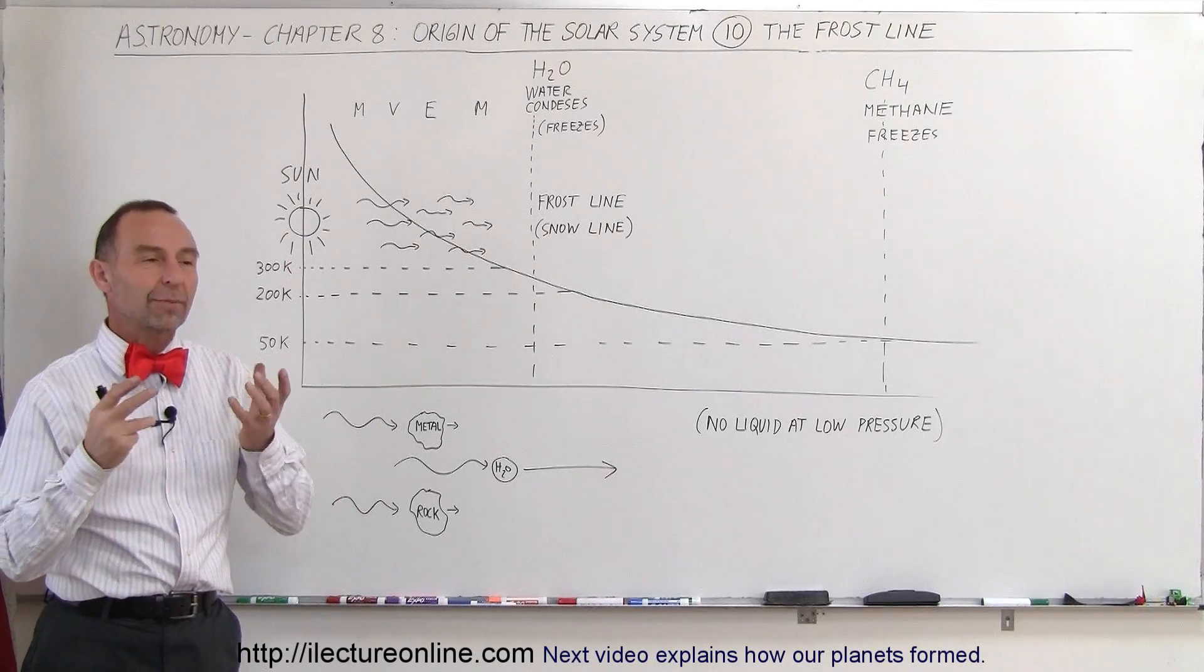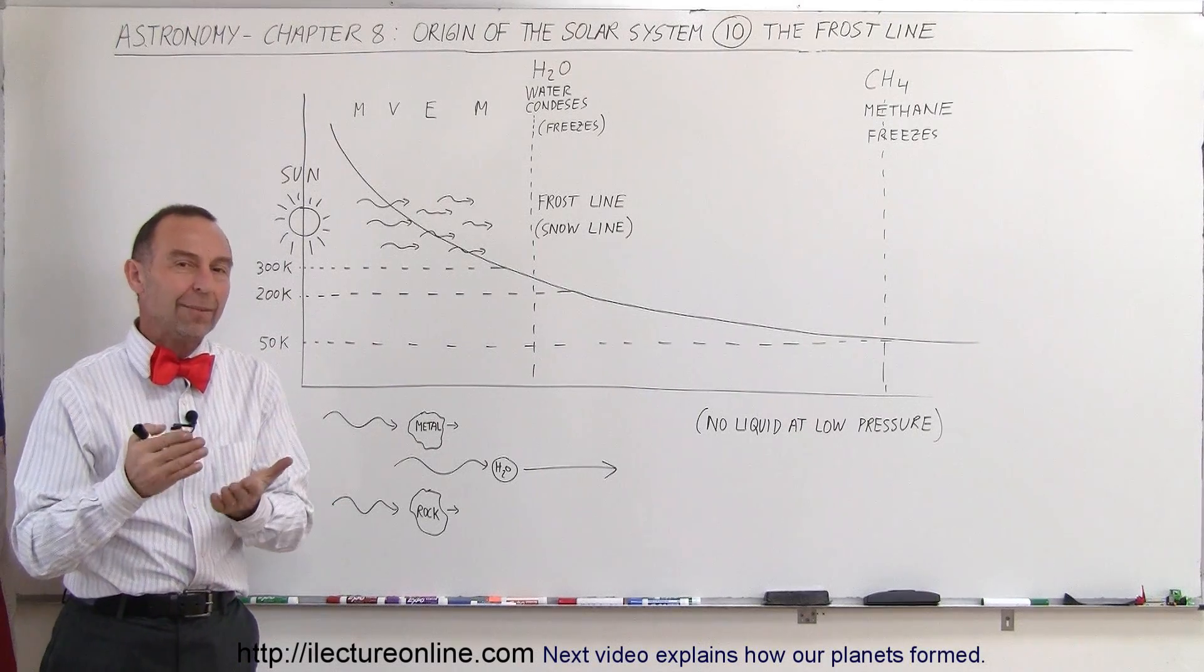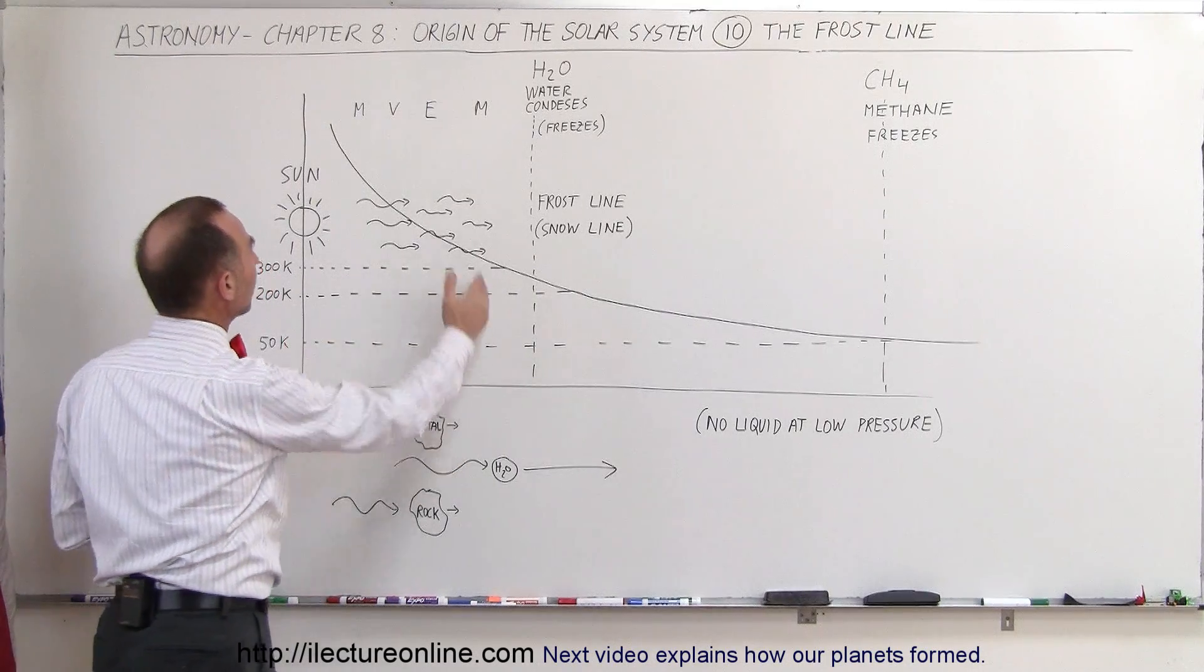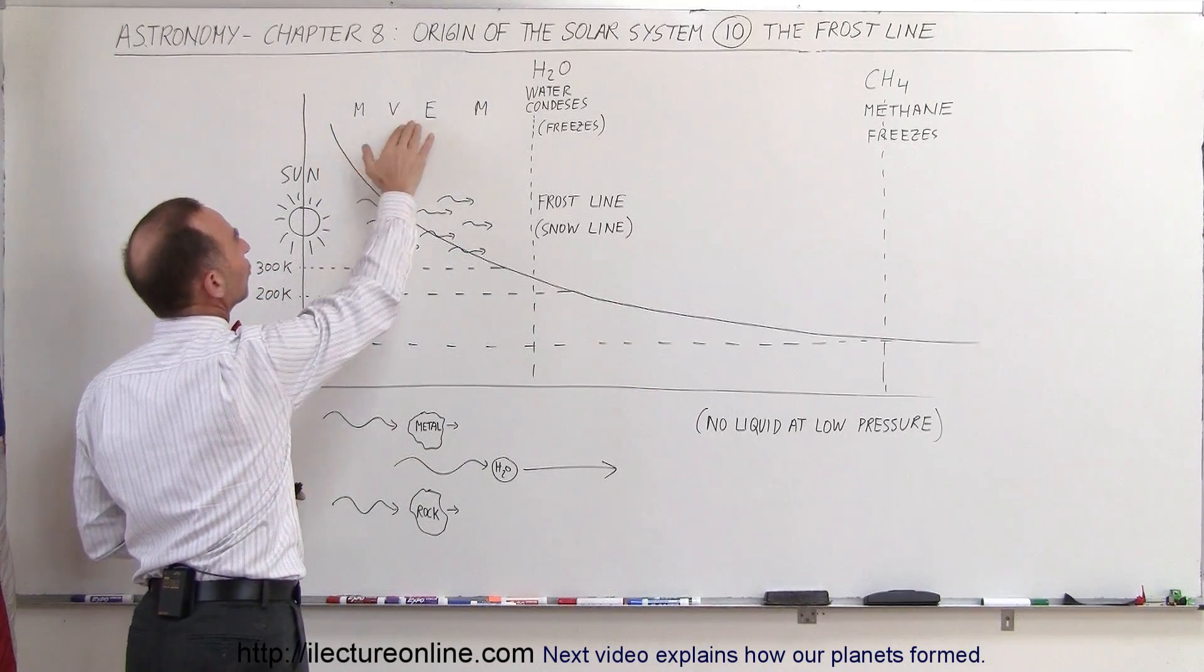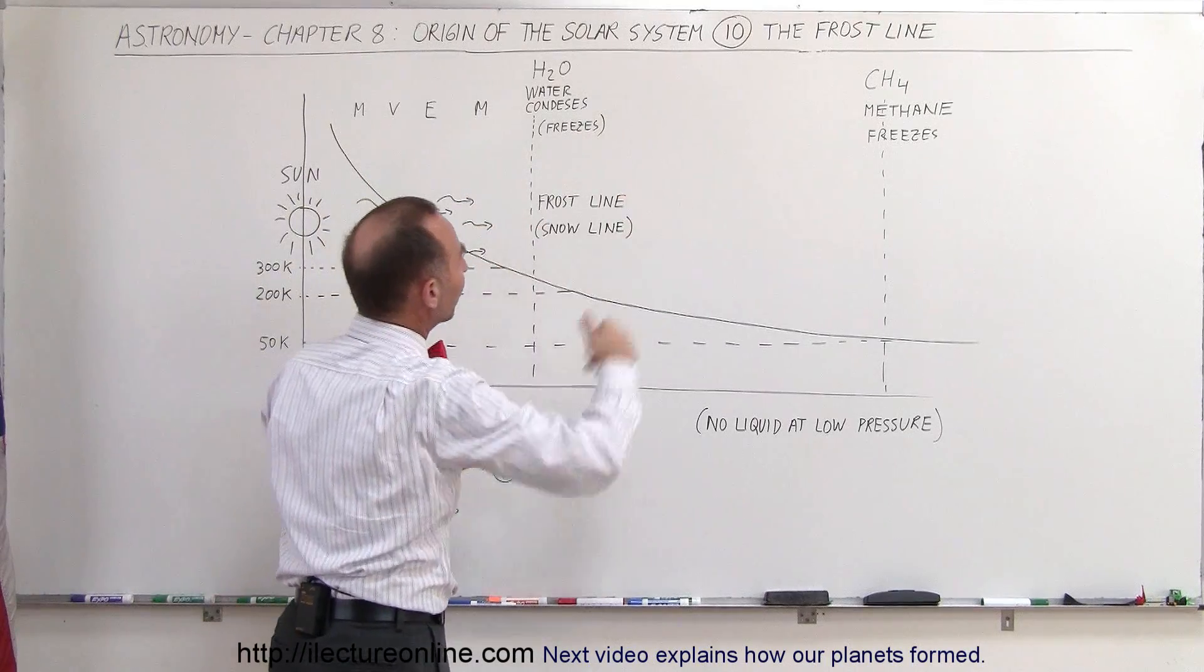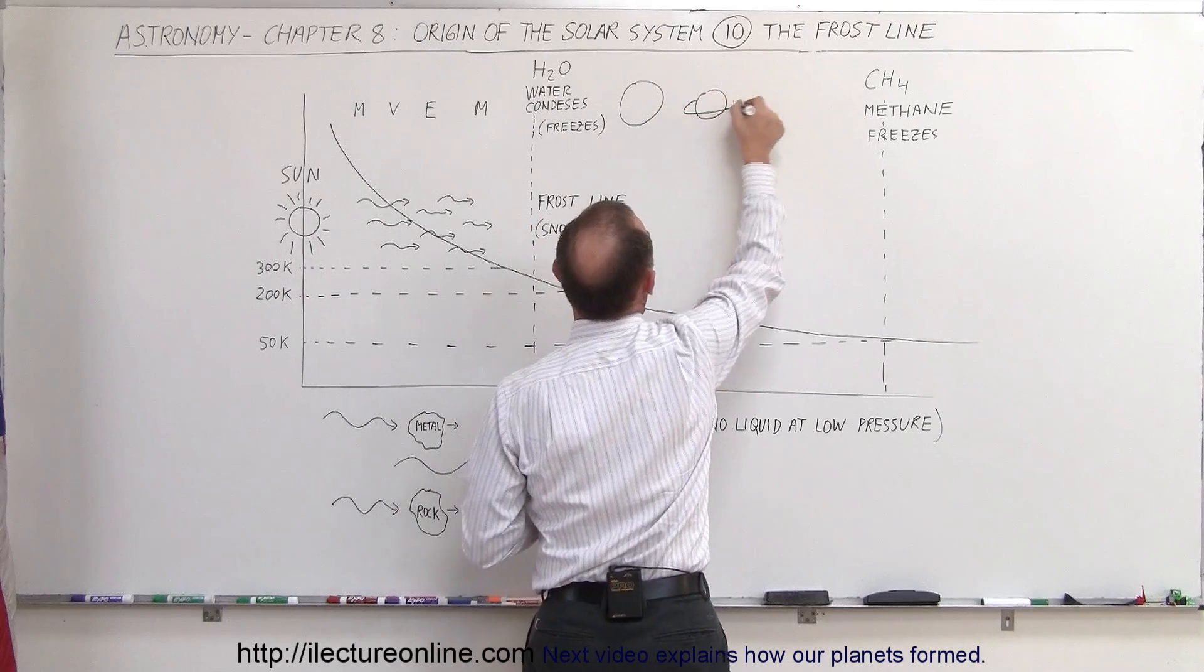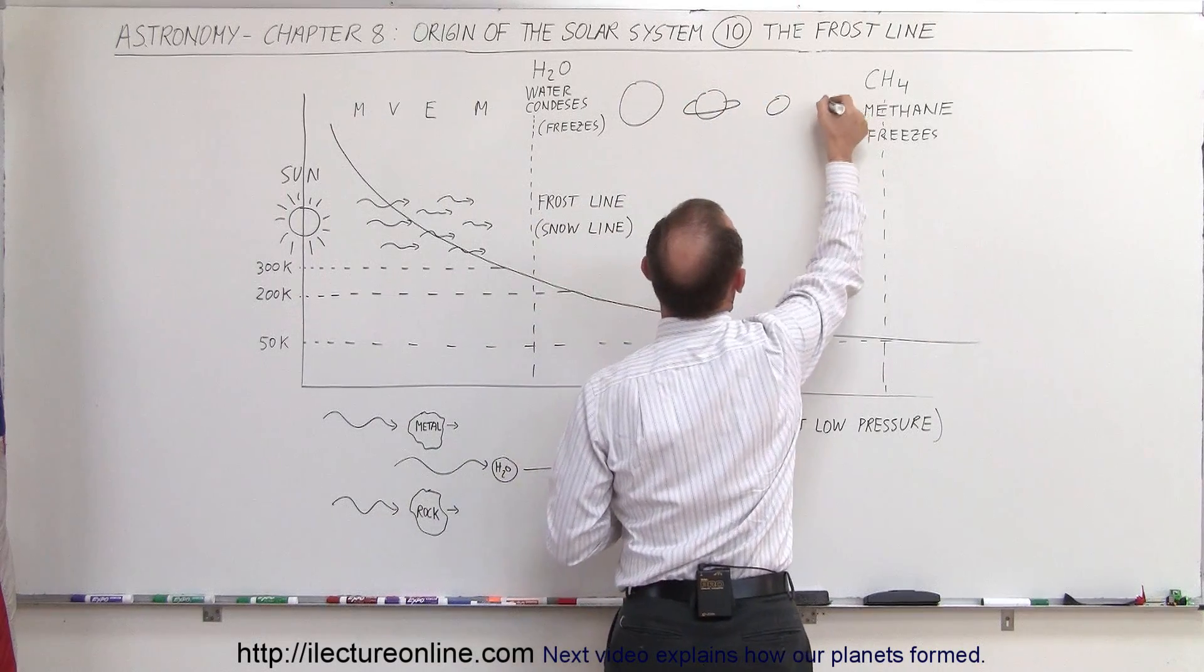Welcome to iLecture Online, and now let's talk about how the solar system became as differentiated as it is. In the inner solar system we have Mercury, Venus, Earth and Mars. Then further away we have Jupiter, Saturn, Uranus and Neptune.